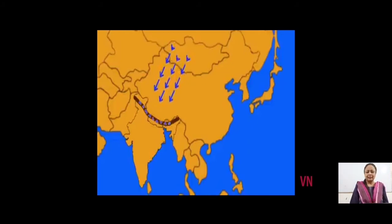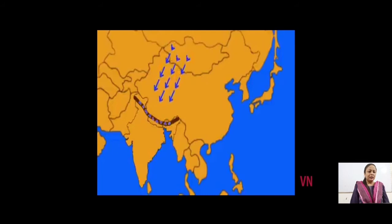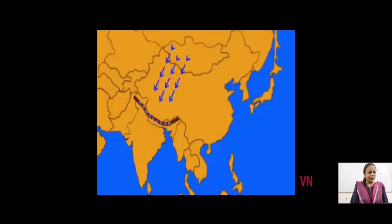The arrows depict the cold winds coming from the Arctic or Siberian region — we call them cold Siberian winds. During winter, these cold Siberian winds proceed towards India, but the Himalayas act like a barrier and do not allow them to enter the country. In this way, during winters, India remains comparatively warmer than the rest of Asia or the regions to the north of the Himalayas. Because of this barrier, India does not become very, very cold during winters — otherwise, India would have become frozen during winters.